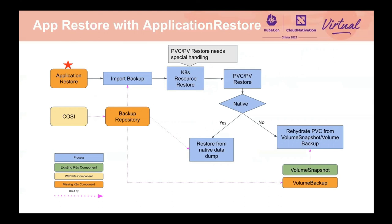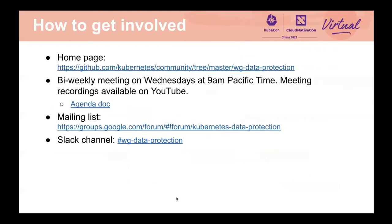Those are all the missing building blocks we have identified and are working on. Now I will talk about how to get involved. This working group is working on identifying missing functionalities in supporting data protection in Kubernetes and figuring out how to fill those gaps. We are also working on a white paper on data protection workflow. We have bi-weekly meetings on Wednesdays at 9 a.m. Pacific time. If you're interested in joining the discussions, you're welcome to join our meeting. We also have a mailing list and a Slack channel. Thank you all for attending the session — please don't hesitate to reach out if you have any questions.